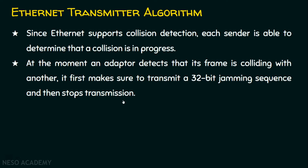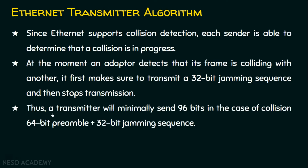Please note this important point: when the adapter detects a collision, it transmits a 32-bit jamming sequence so that other hosts know a collision has happened, and then it stops transmission immediately. Thus, a transmitter will minimally send 96 bits in case of collision — 32 bits for the jamming sequence plus a 64-bit preamble.